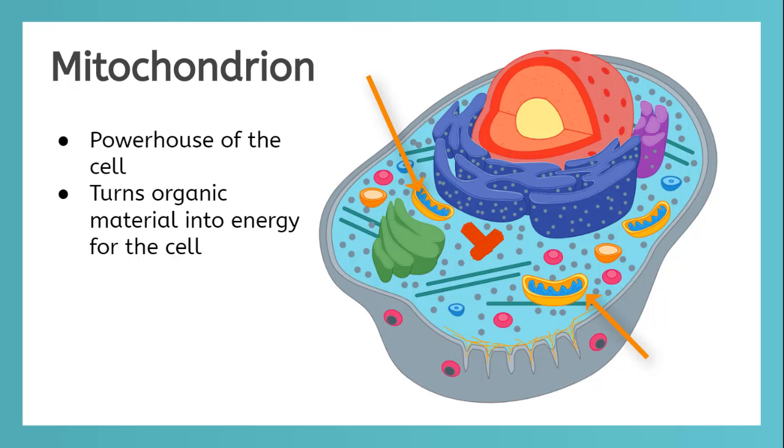The orange and blue smiles are mitochondria, which are famously called the powerhouse of the cell. They turn organic material into energy for the cell. This is the energy that helps the cell move and divide. If a cell needs a lot of energy, like a muscle cell, it will have lots of mitochondria.